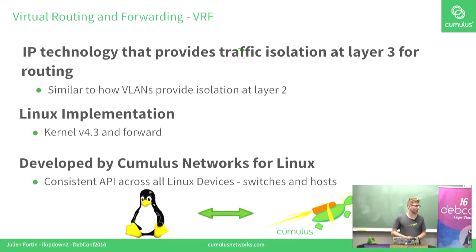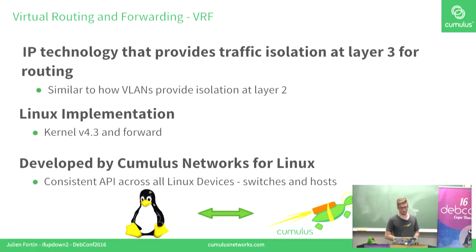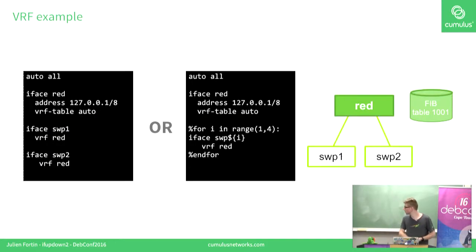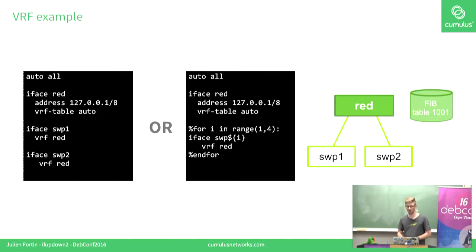VRF — Virtual Routing and Forwarding — is an IP technology that provides traffic isolation at layer 3 for routing. It was developed by Cumulus Networks and upstreamed into Linux. It's now available in kernel 4.3 and higher. Here's a small example of how you would configure a VRF called RED with two slaves, SWP1 and SWP2, sharing a forwarding table ID of 1001.